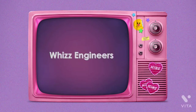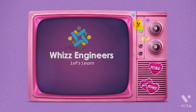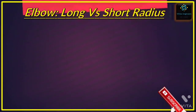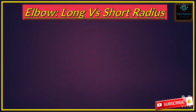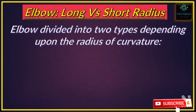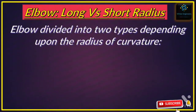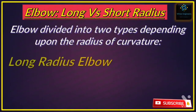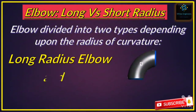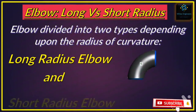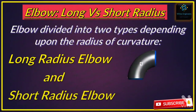Hello friends, welcome to WithEngineers. Today we will learn about the difference between long radius and short radius elbow. Elbows are divided into two types depending upon the radius of curvature: the first one is long radius and the second one is short radius.